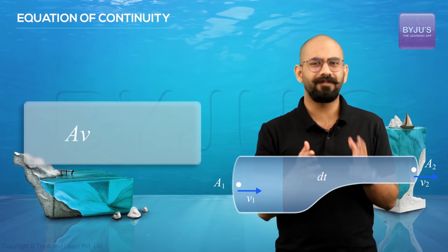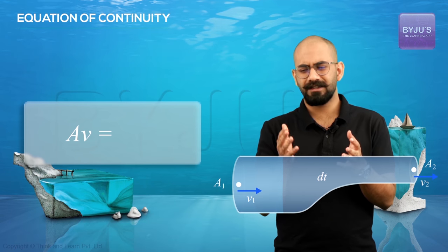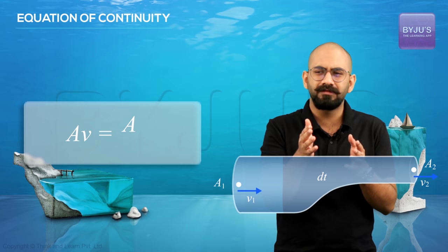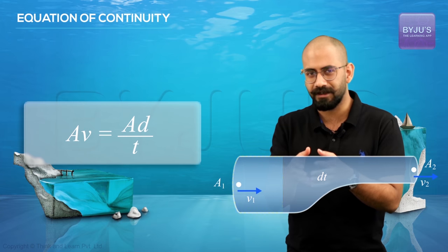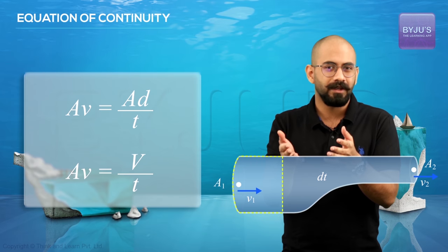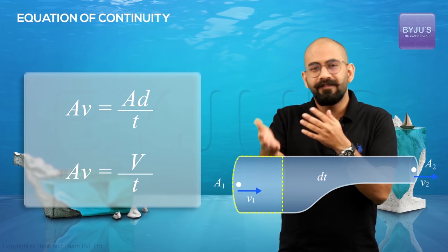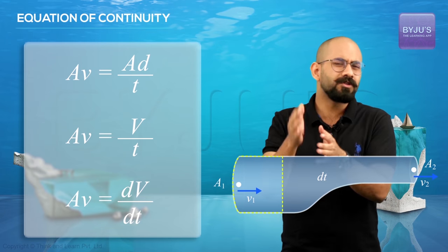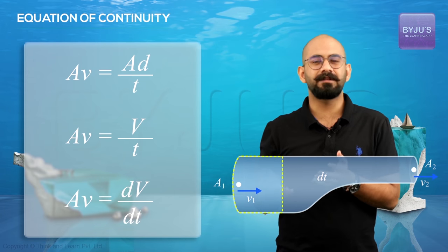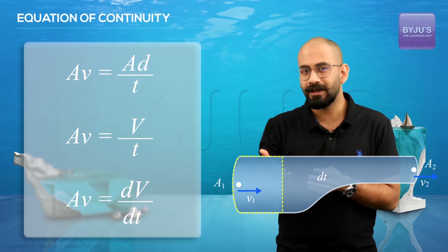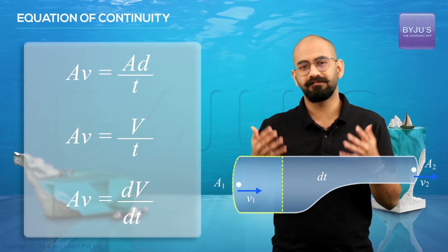And this product, AV, is equal to what? It's basically equal to the area into distance traveled by time taken. Now area into that distance is nothing but the volume. So AV is nothing but the change in volume by time taken. You can say that AV is dV/dt, where capital V is the volume.